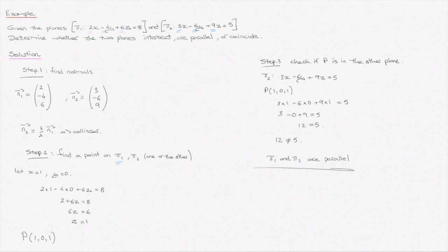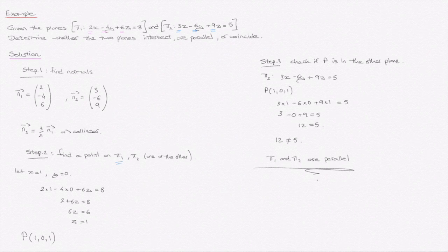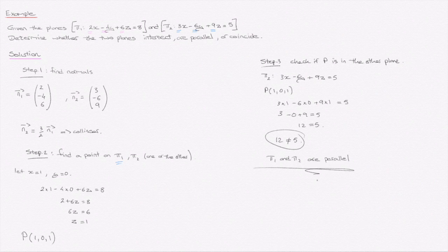So we've shown that two planes are parallel. To recap: step 1, find the normal to each plane; step 2, find a point P on one of the planes; step 3, check whether P is also in the other plane. Since we ended up with a mathematical inconsistency, the two planes are parallel and have no points in common.